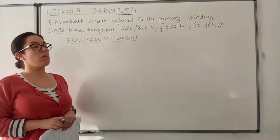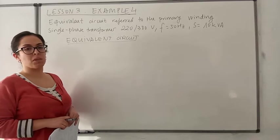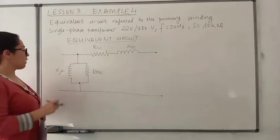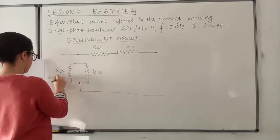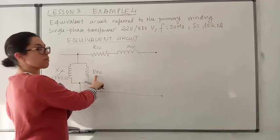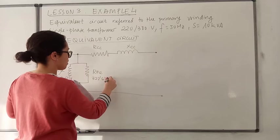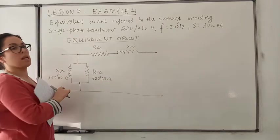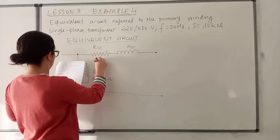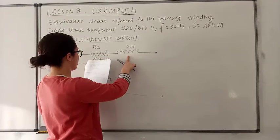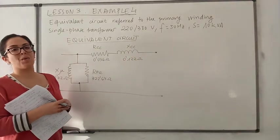All these calculations from the no-load test and the short circuit test lead to the following equivalent circuit. Here you have the magnetizing reactance and the resistance of iron losses in parallel, and here we have the short circuit resistance and the short circuit reactance. All of the values are referred to the primary winding.